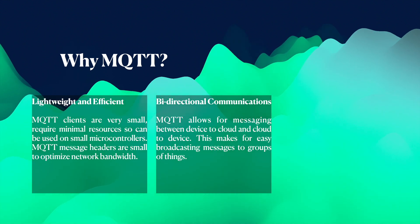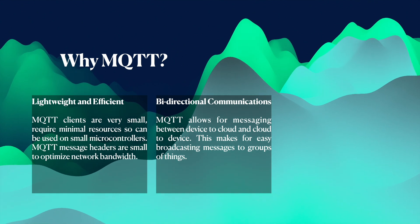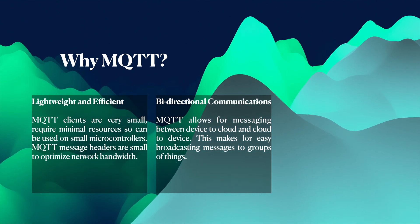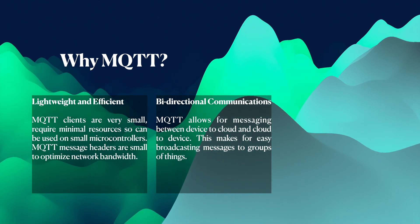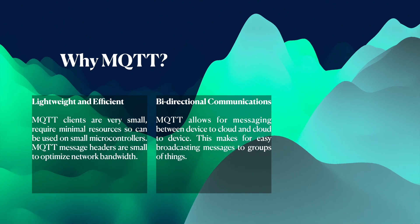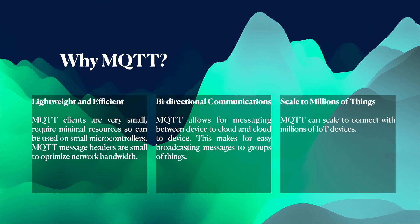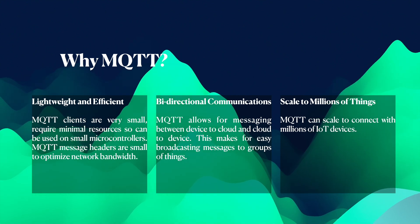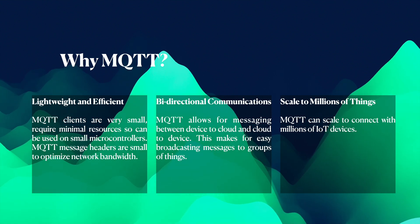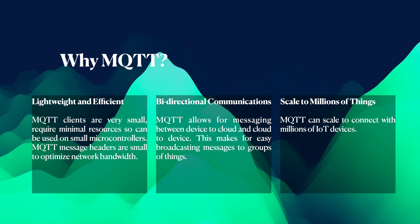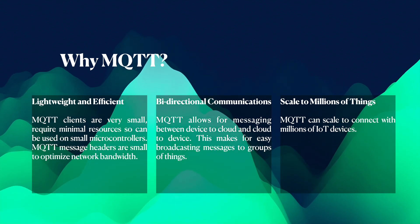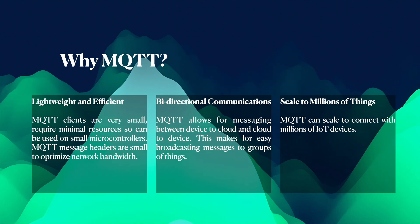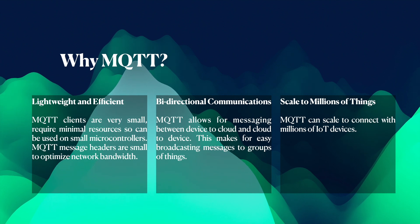Next, it's bi-directional communication. MQTT allows messaging between device to cloud and cloud to device, making it easy for broadcasting messages to groups of IoT devices. We can do two-way communication — either send data to the cloud or get data from the cloud. Next, we can scale to millions of things. Because it's lightweight and efficient, we don't need to carry many resources. The minimal resources free up capacity to connect millions of IoT devices.